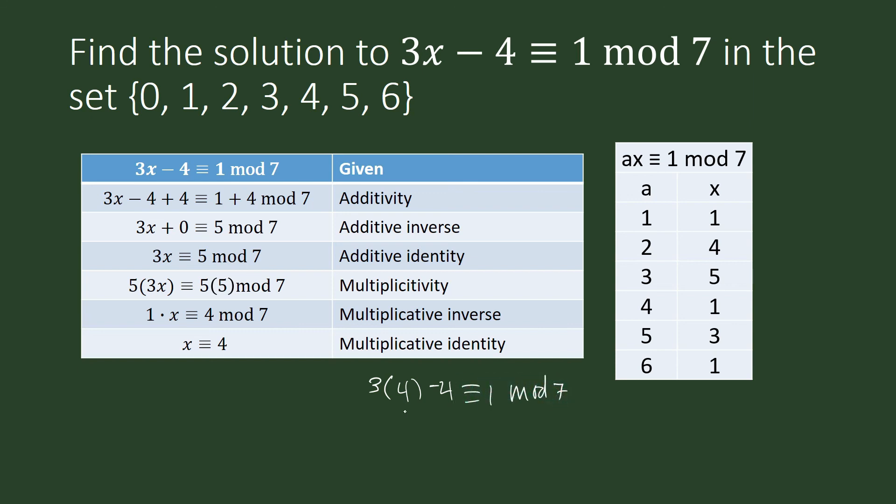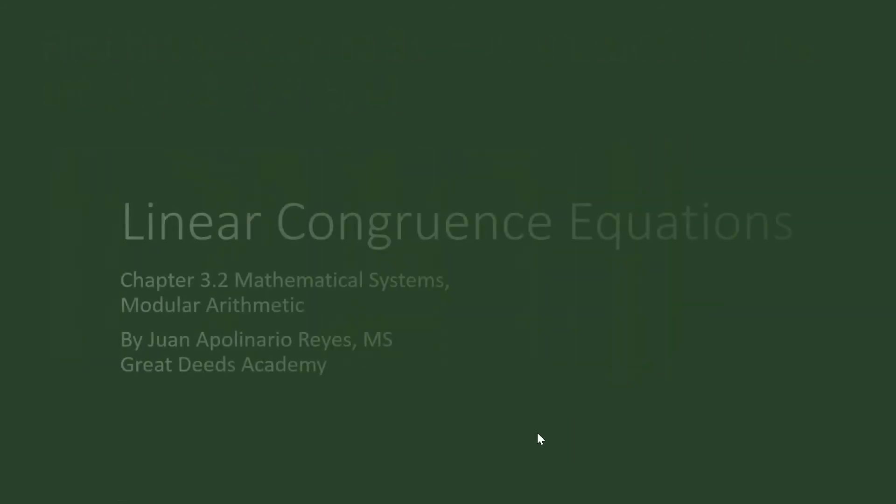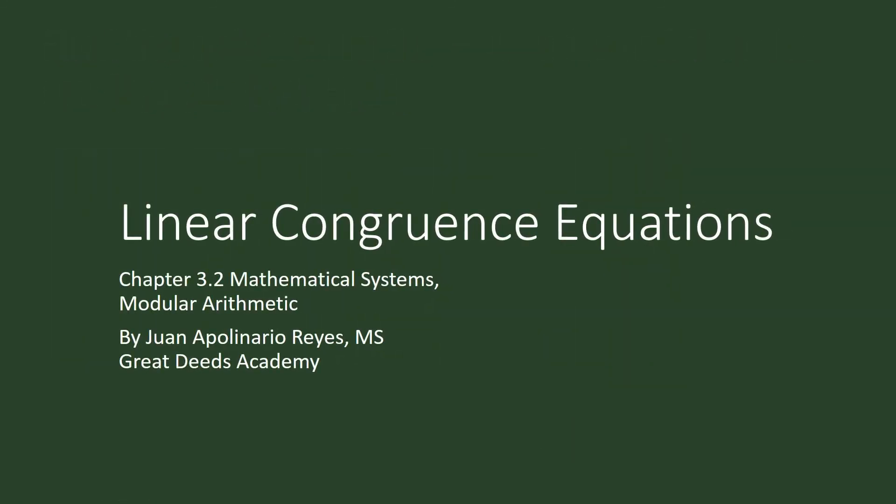3 times 4 is 12. 12 minus 4 is 8. Is 8 congruent to 1 modulo 7? Let us put a question mark. Well, yes, because when you divide 8 by 7, the remainder is 1.